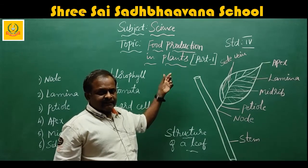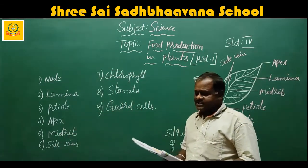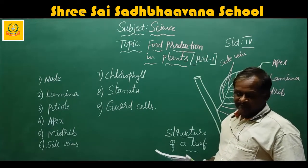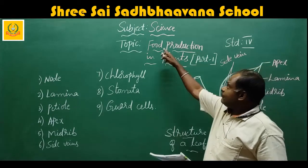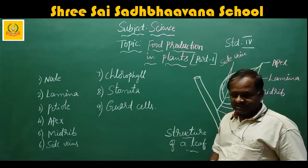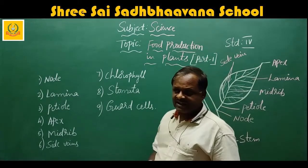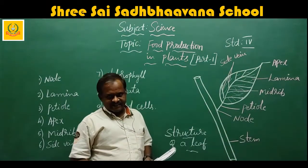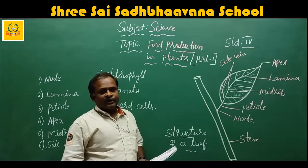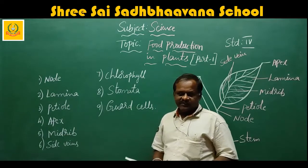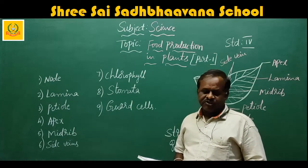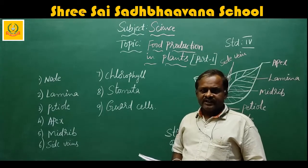In this chapter we will learn what is plant life. The topic is food production in plants — this is the first chapter in your science. I hope you have purchased the textbooks. Please open page number 5 and I will start reading; just read along with me.